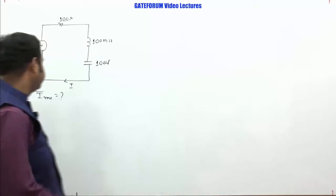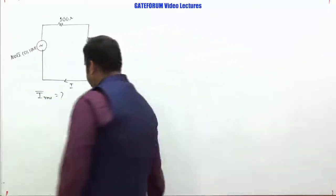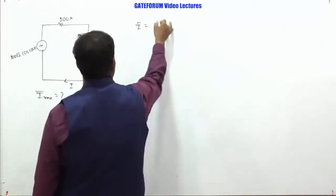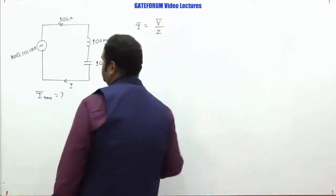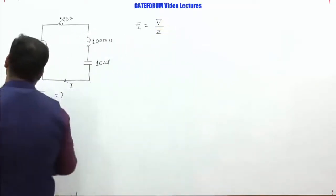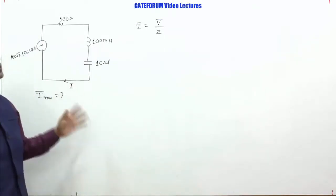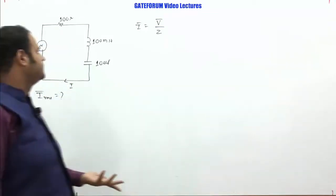So this is the circuit given. We need to find the RMS value of this current I. So the RMS value of I is nothing but V by Z. So this is in peak form, right, because the time domain information is in peak form. So let us first calculate what is this phasor current I in the peak form, then by dividing by root 2 we can get its corresponding RMS value.